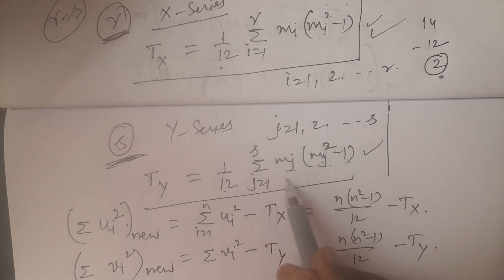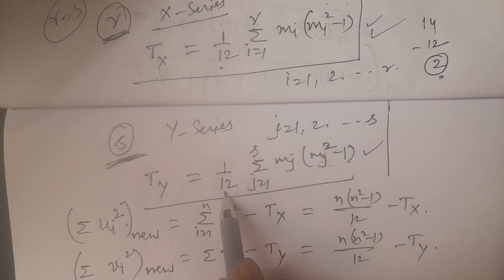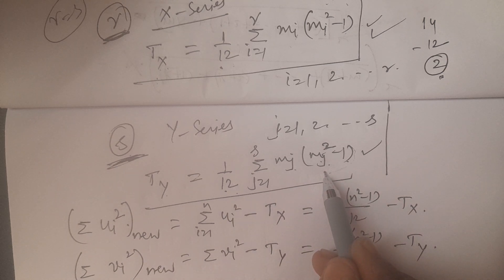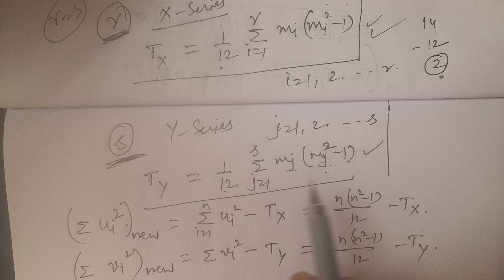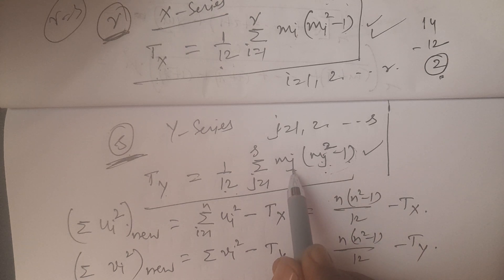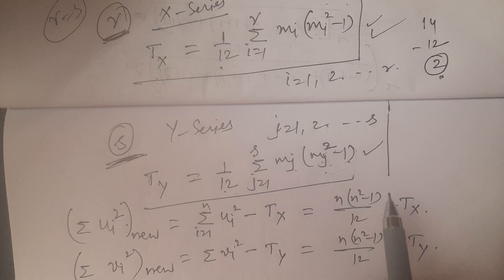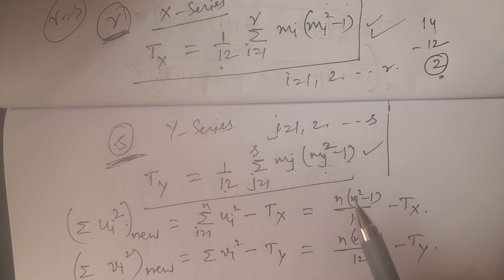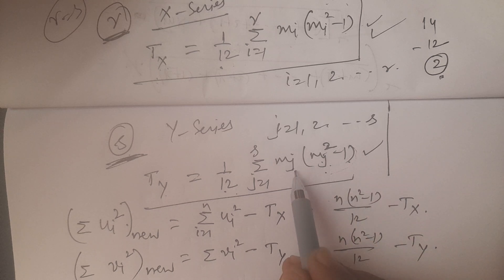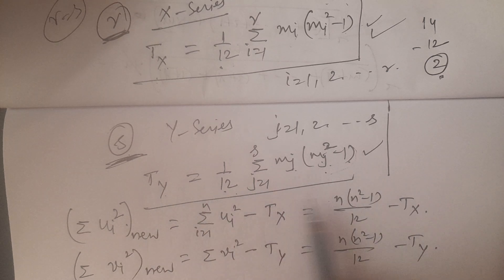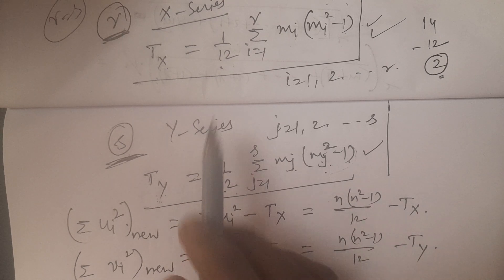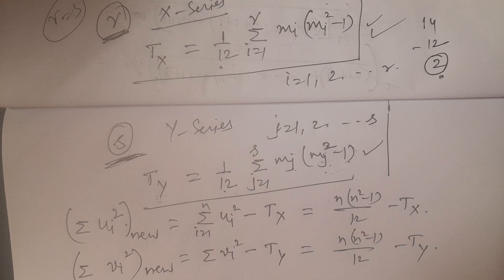For example, if two observations are tied, then M1 = 2. If another three observations are tied, then M2 = 3. If another two observations are tied, then M3 = 2. You add these up and obtain Ty. Tx and Ty are very similar formulas, applying to the X series and Y series respectively.